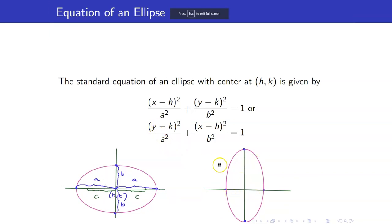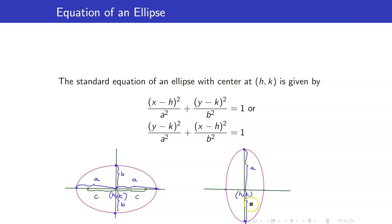Similarly, if you have a vertical ellipse, which will happen if a appears with your variable y. Again, this is your center (h, k). This is your major axis and this is your minor axis. The length of the major axis will be 2a because the vertices are a units away from the center. And the endpoints of your minor axis will be b units away from your center.